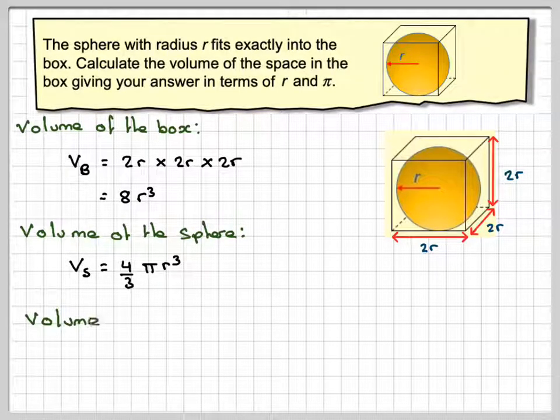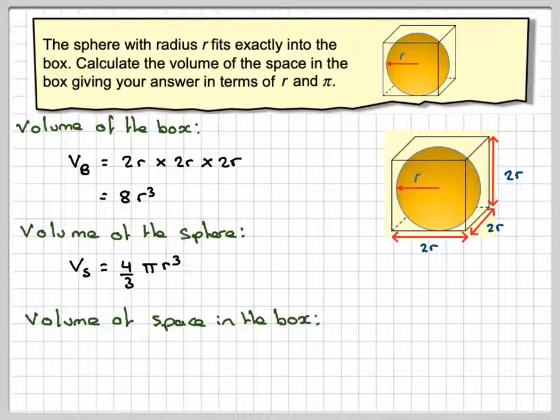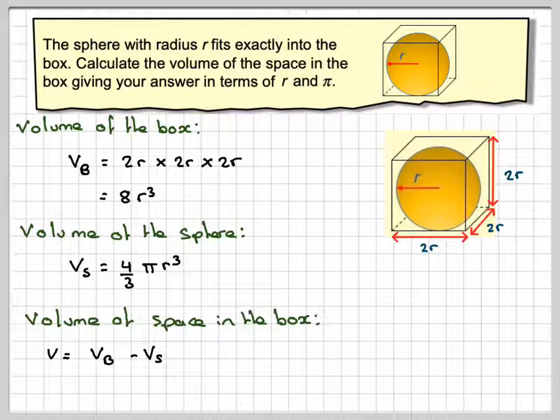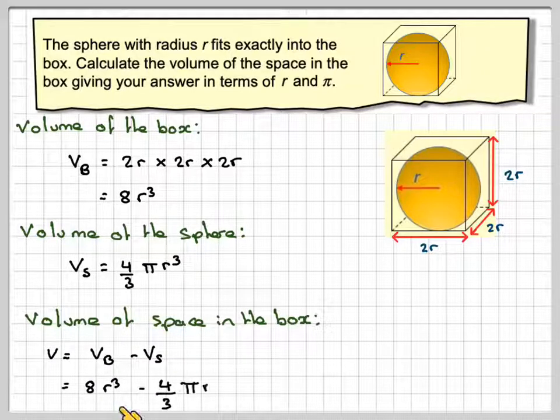So the volume of the space in the box will be the volume of the box minus the volume of the sphere, so our volume that we require. So it's going to be 8r cubed minus 4 thirds pi r cubed.